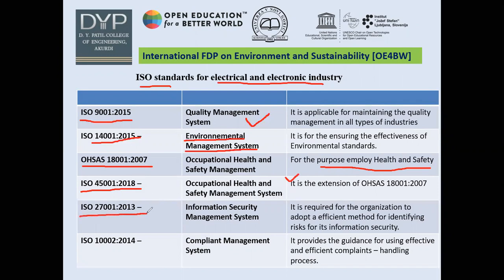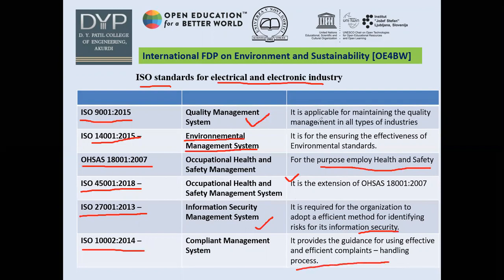ISO 27001:2013 is for information security management systems — required for any organization to adopt efficient methods for identifying risks to its information security. Then ISO 10002:2004 is the complaint management system, where organizations should have an efficient complaint-handling process. These are the ISO standards for the electrical and electronic industry, which IoT and Industry 4.0 are part of, and they should all follow these standards.